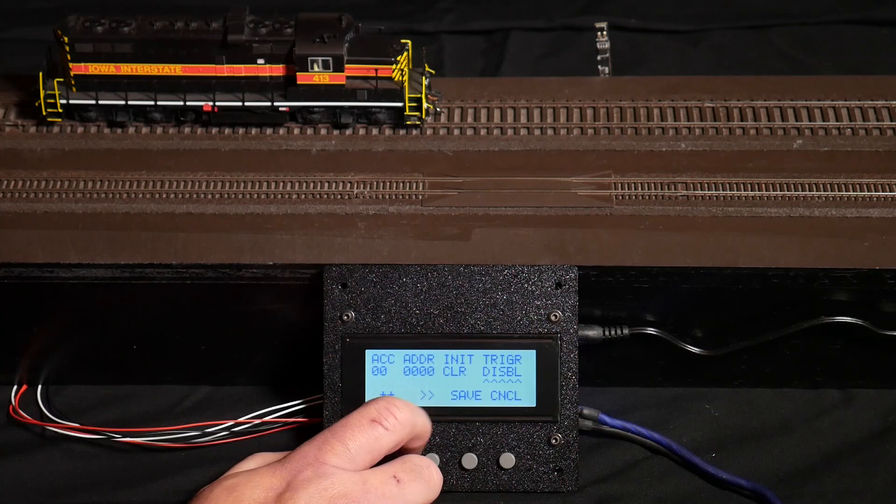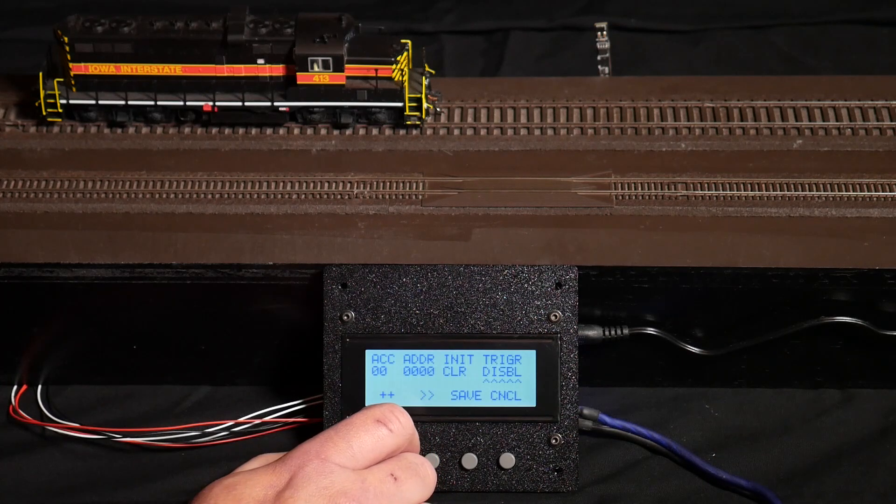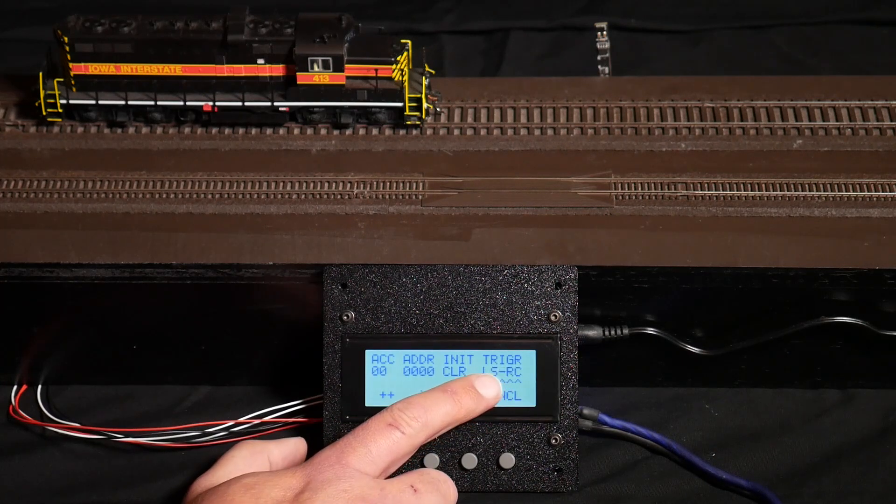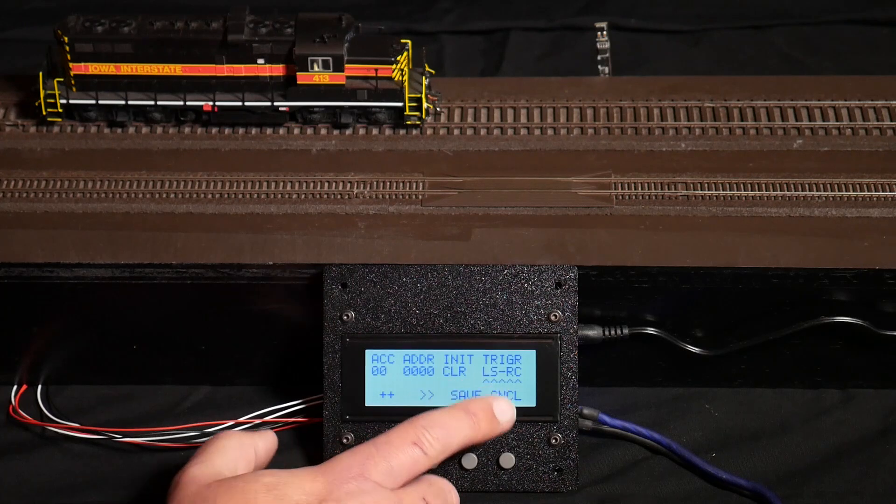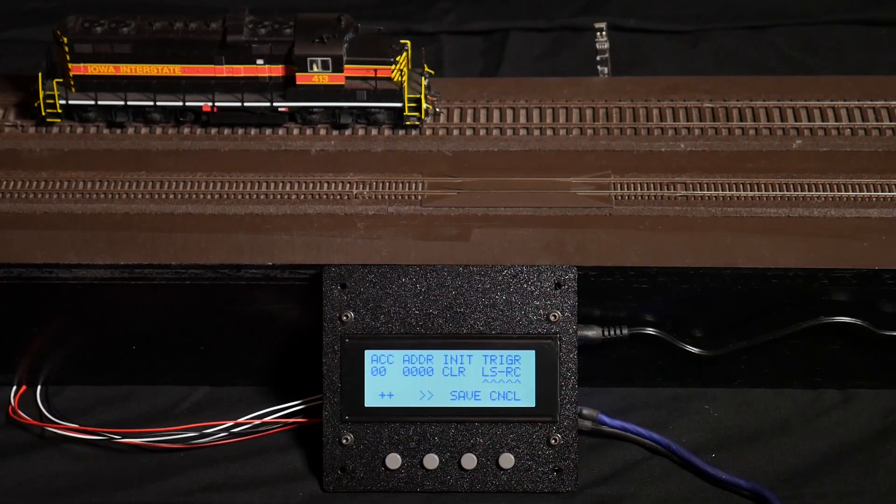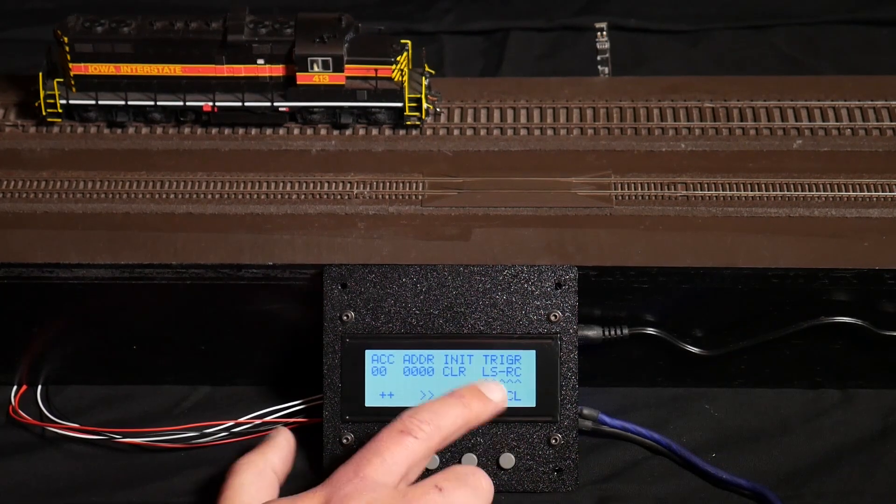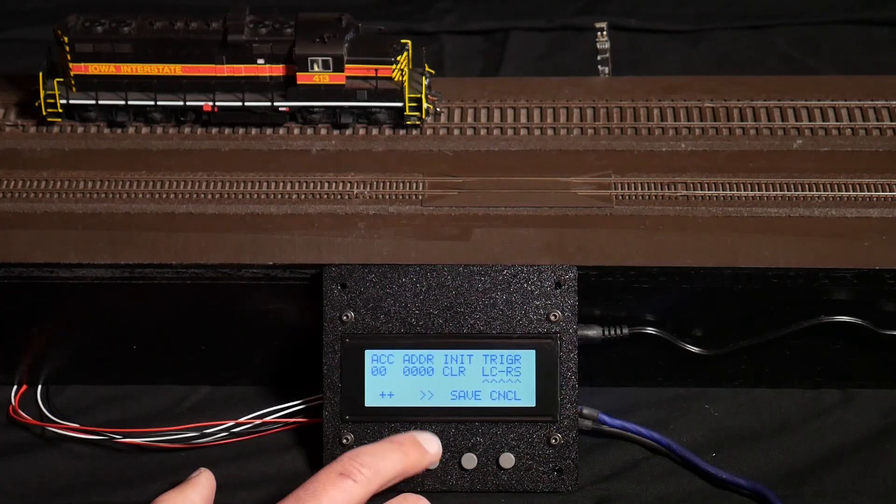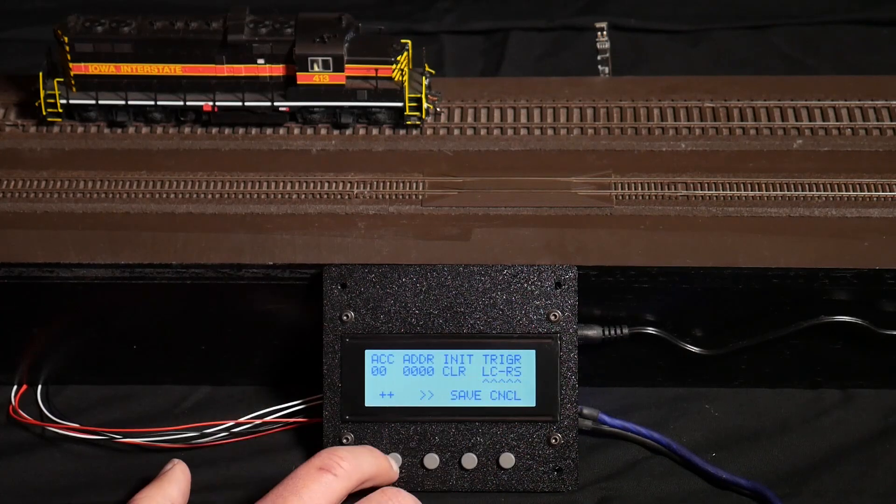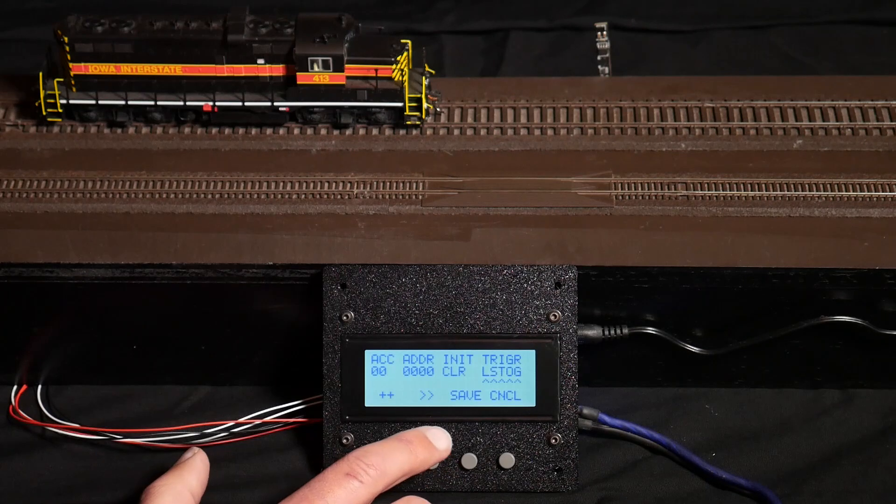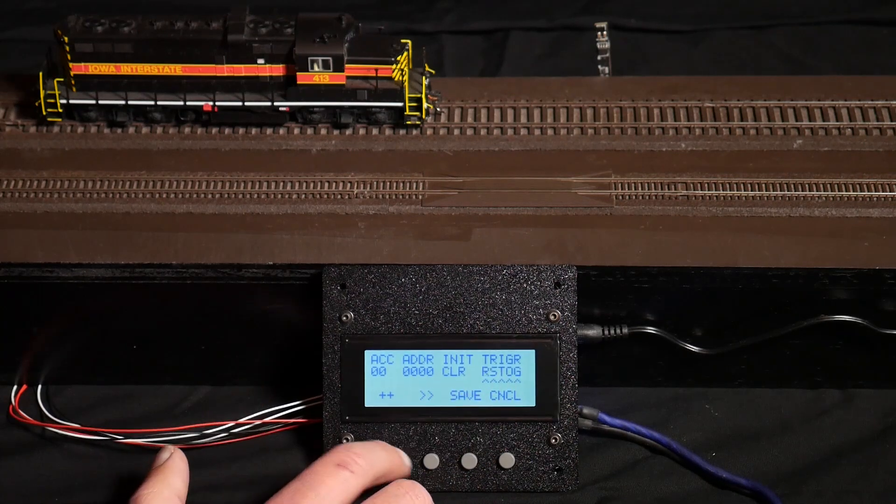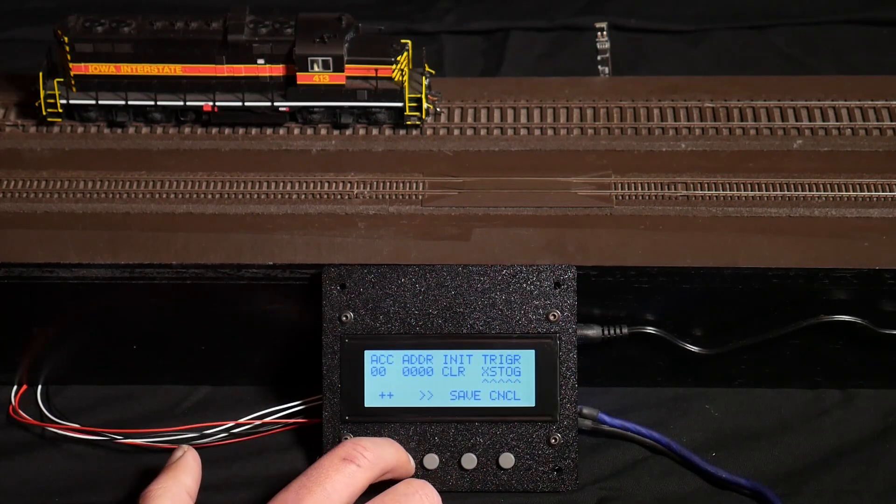So for example, disable means it's always disabled, it's not in use. I can have it set when the locomotive reaches the left end and cleared when it hits the right end. I can have it cleared when it hits the left end, set when it hits the right end. There's also ones that toggle on the left end, toggle on the right end, toggle on any end.